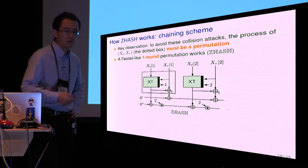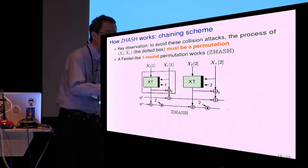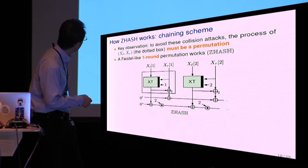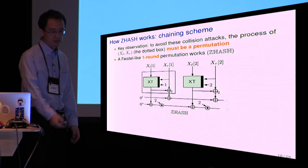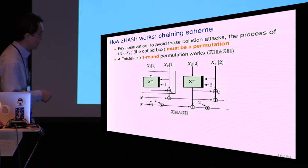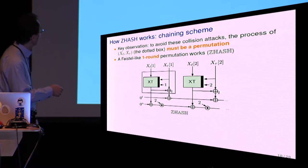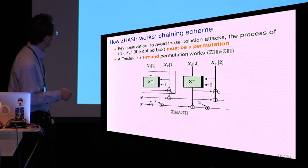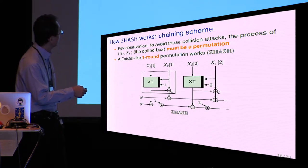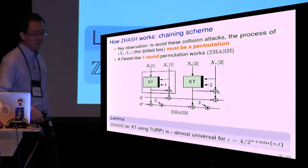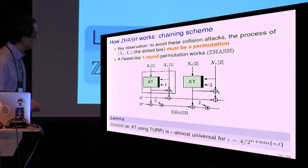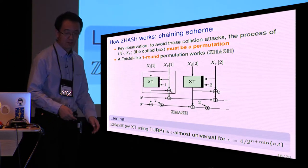So the key observation here is to avoid these collision attacks. For beyond-birthday-bound security, we need to avoid these attacks. The process of each message block, shown by this box, must be a permutation. And we also need some other technical conditions, but this is the most important observation. And we found that this Feistel-like round of the one-round permutation, using only one XT call inside the box, actually works. The resulting scheme, which I show here, Z-hash in the math bold font, has a good collision probability. Namely, it is epsilon almost universal for epsilon equal to 4 over 2 to the n plus minimum of n and T. So it has beyond-birthday-bound collision probability.